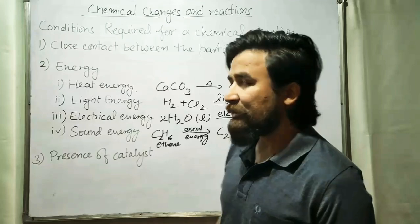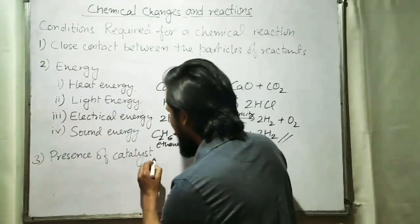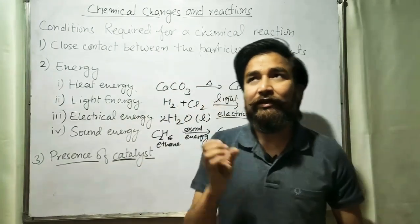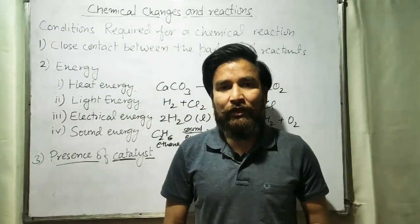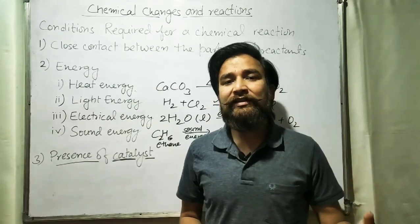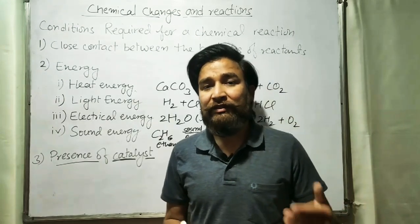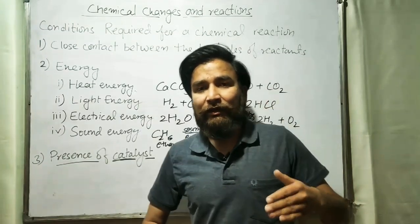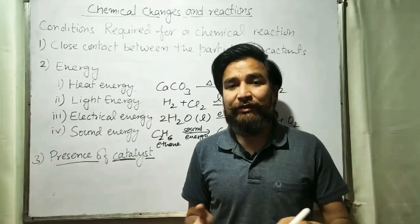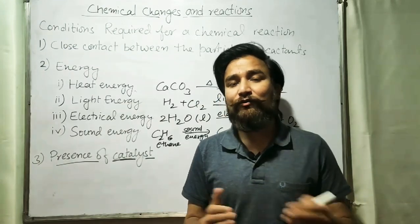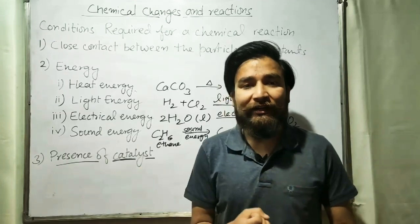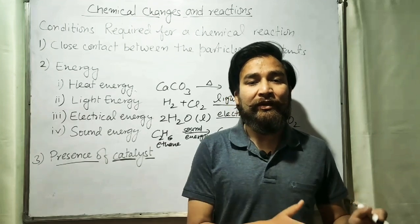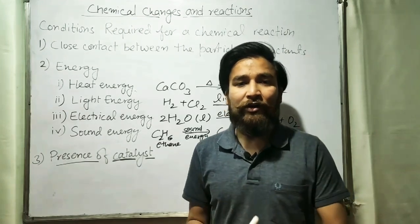The last topic is the presence of a catalyst. First of all, we will see the term catalyst — what is the meaning of catalyst? Basically, a catalyst is a substance which enhances the rate of a chemical reaction. It means it increases or may decrease the rate of a chemical reaction. Because of a catalyst, a chemical reaction can become fast or very slow. A catalyst is a very important substance for a reaction to take place.